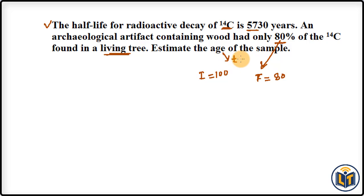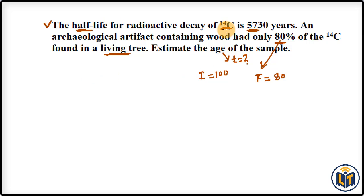The question asks us to calculate the age of the sample, meaning we have to calculate time T. Since the half-life of carbon-14 is given, we can calculate the rate constant of the reaction, then apply the formula for the first order of reaction to calculate T. The relation between half-life and rate constant is K = ln2 / T½.